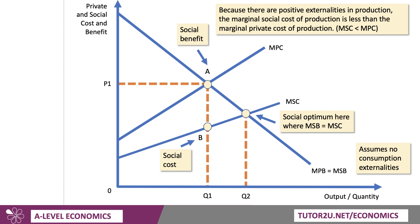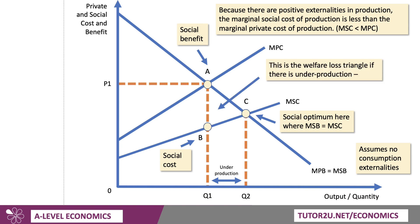That optimal output is labelled Q2. Therefore, if agents are only acting on the basis of their own costs and benefits and the free market ends up at Q1, then we're under-producing — and that is a misallocation of scarce resources. There is a welfare loss triangle: the social welfare loss from under-production is the area A, B, C. Don't forget, in the exam, always try to show the welfare loss — it really tells the examiner you're in total control of this kind of diagram.